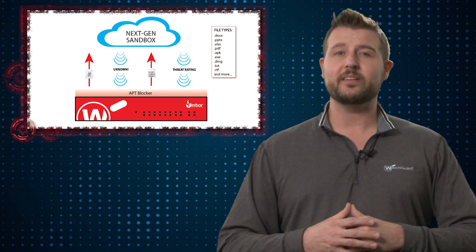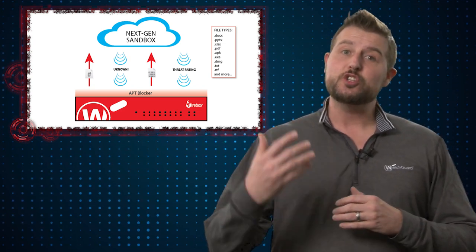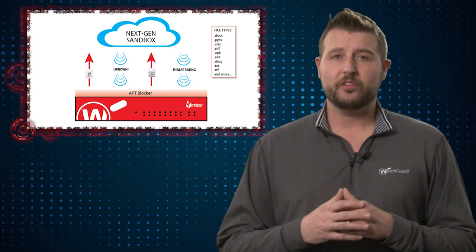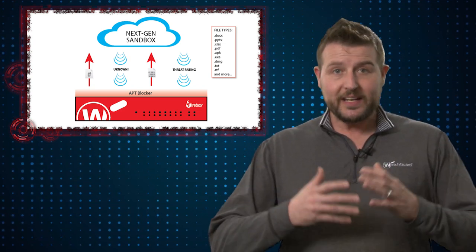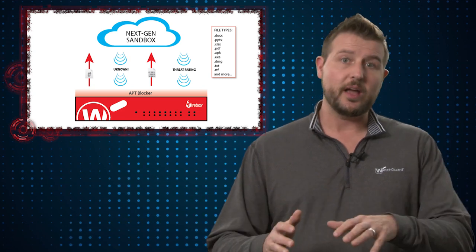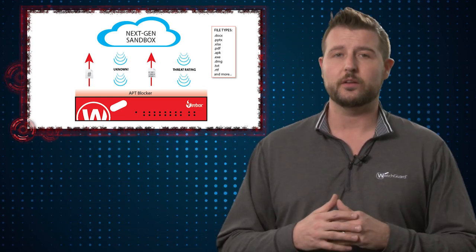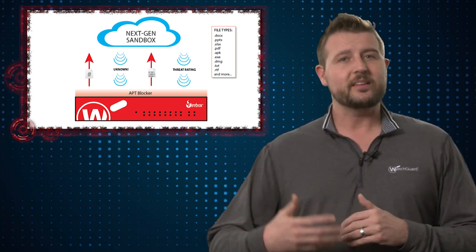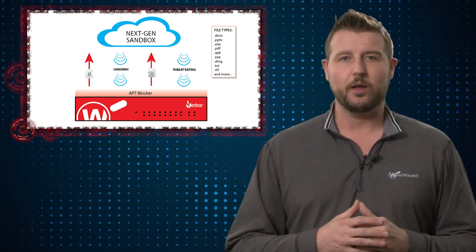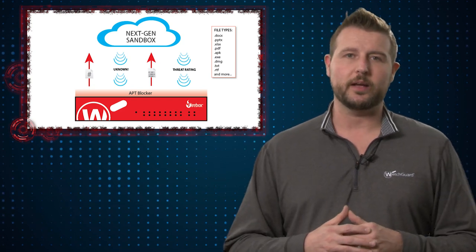Something like WatchGuard's APT Blocker can catch new, never-before-seen malware even without signatures. If AV vendors miss this particular threat, things like APT Blocker might still be able to catch it and block it.